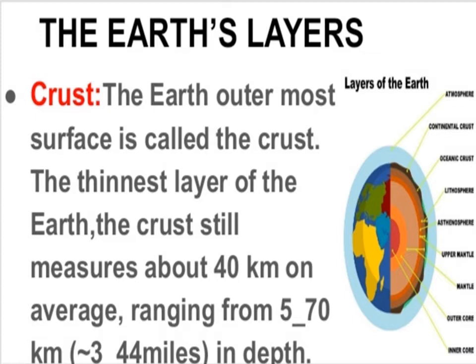Now let's discuss the details of each Earth layer. The crust is the outermost thin layer of the Earth where we all live. The crust varies from about 3 to 5 miles thick at the ocean floor to around 25 miles thick on land. It is the thinnest layer of the Earth, measuring about 40 kilometers on average.